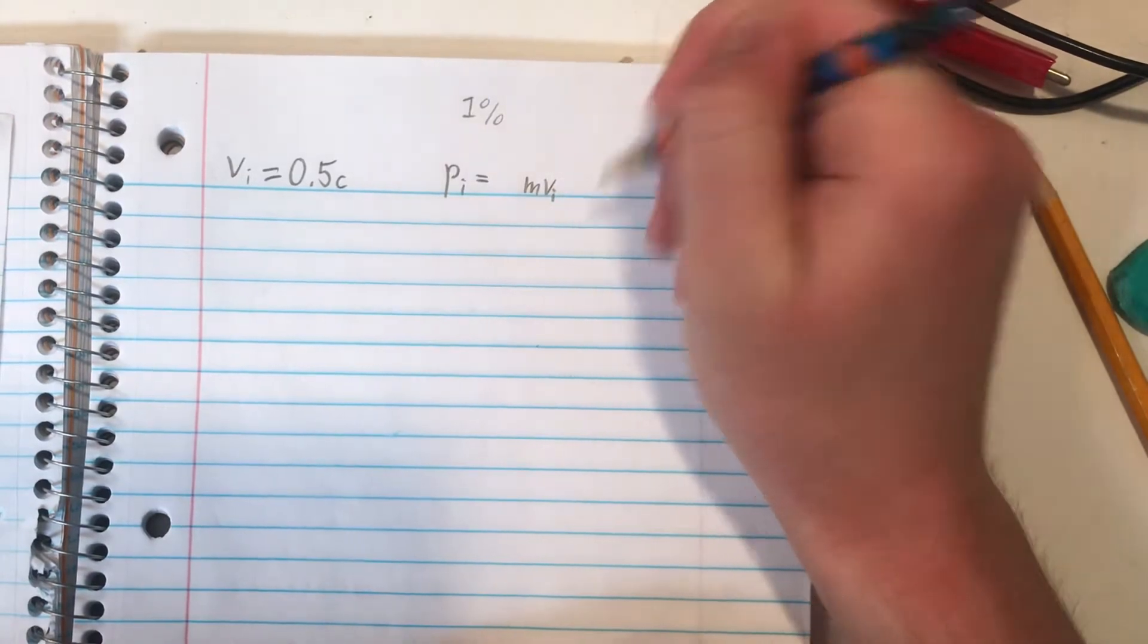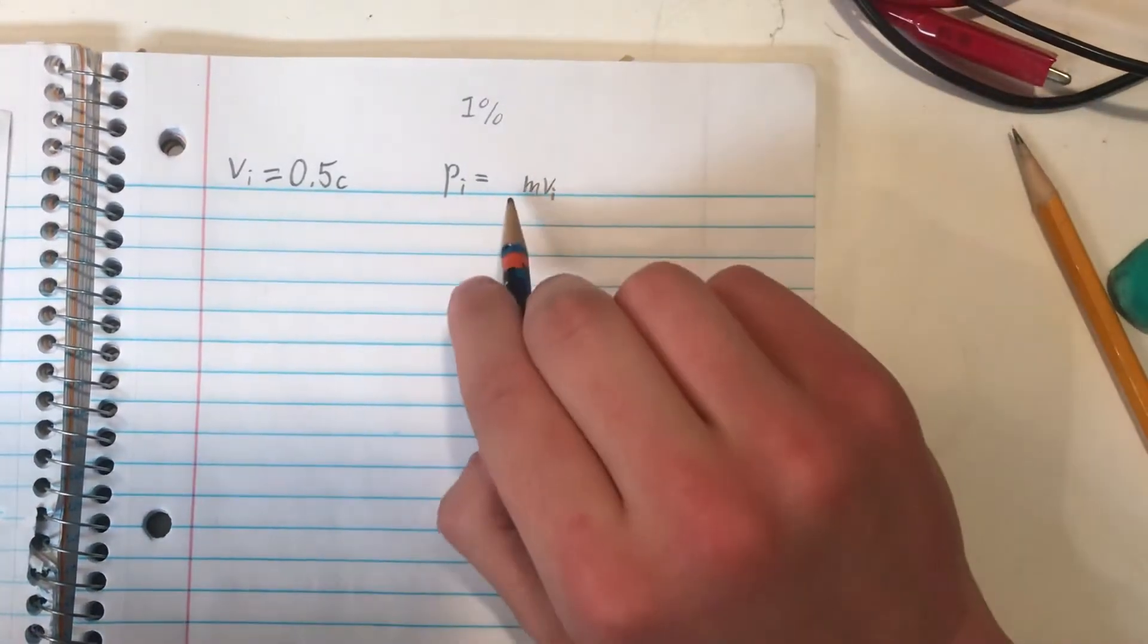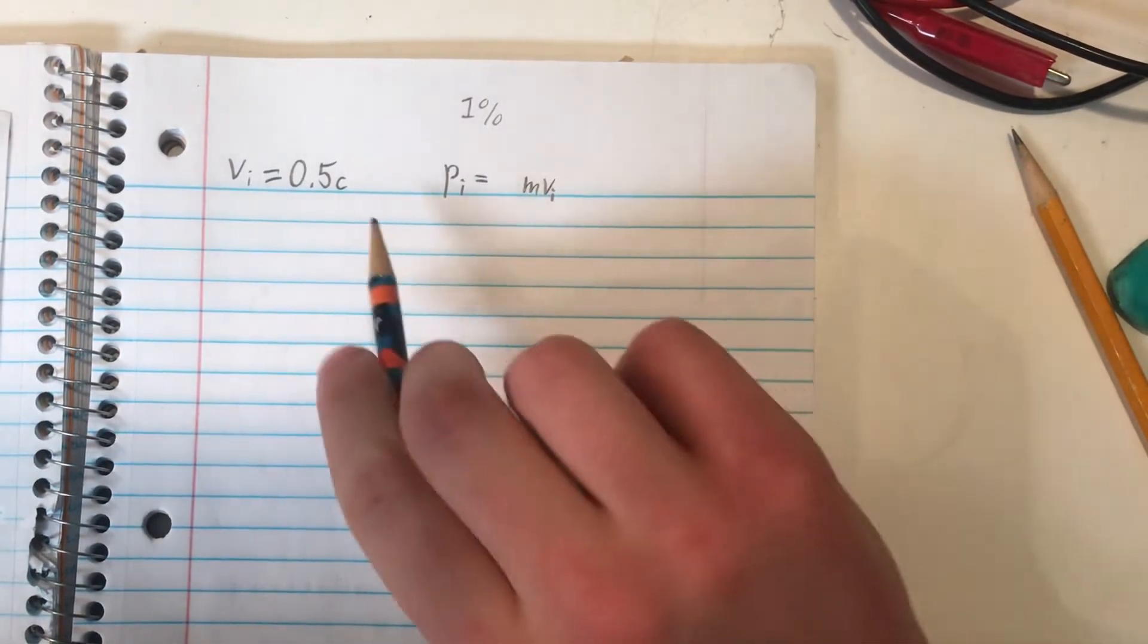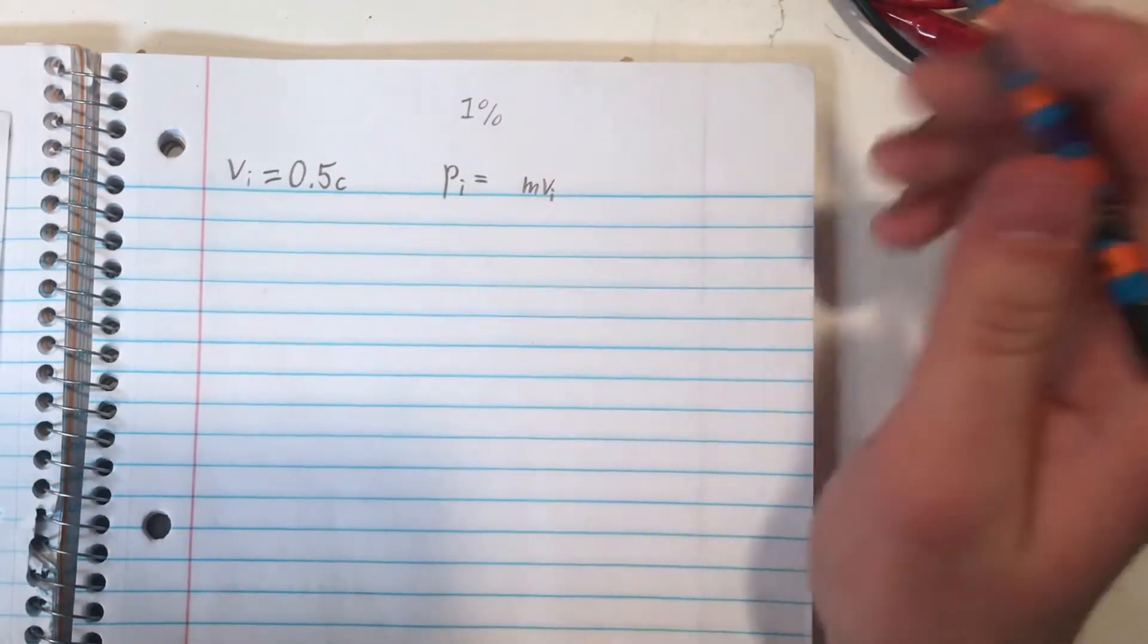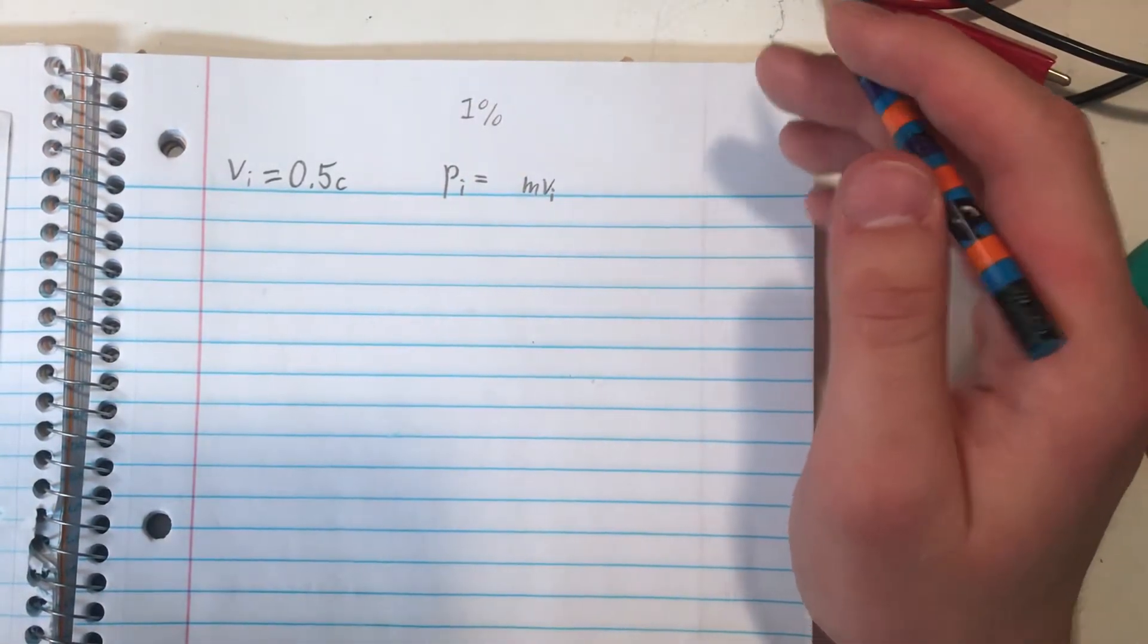Though we'll call it v sub i, since it's the initial velocity we're working with. However, this formula only applies in Newtonian physics. Since we're dealing with speeds super fast, at half the speed of light, we're gonna have to go with relativistic physics here.